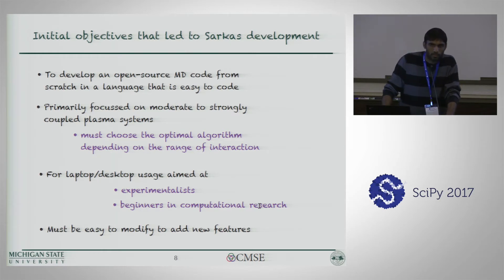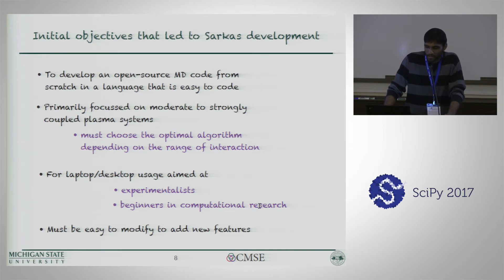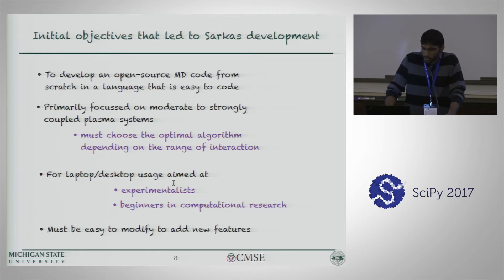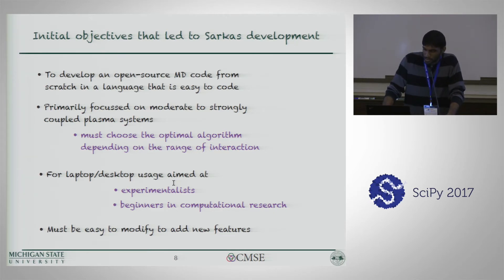What were the initial objectives that led to developing Circus? Mainly it was a fun project, but we added serious objectives. If it went well, this would be an open-source MD code in a language that is easy to code, primarily focused on strongly coupled plasmas, and must be able to choose the optimal algorithm depending on the range of the forces. It was mainly aimed for laptop or desktop use for experimenters to make it part of their workflow, or for beginners in computational research in strongly coupled plasmas. And importantly, the code must be easy to modify so it can grow.